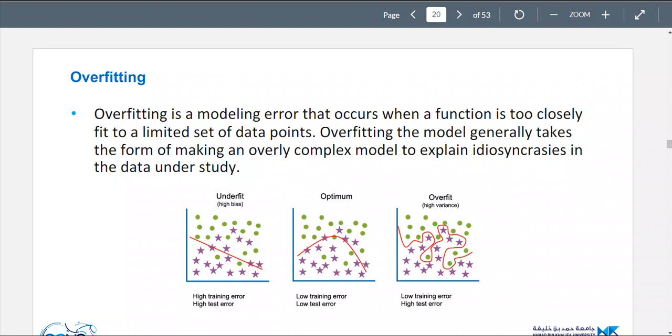Overfitting is a concept in machine learning and it's a modeling error that occurs when a function is too closely fit to a limited set of data options. Overfitting the model generally takes the form of making an overly complex model to explain idiosyncrasies in the data under study.